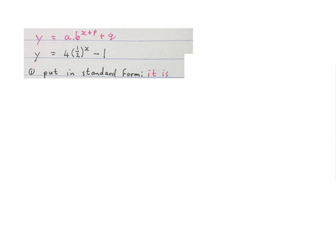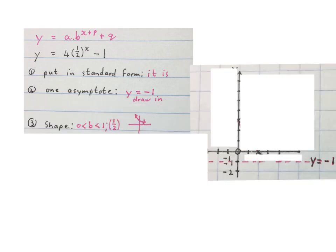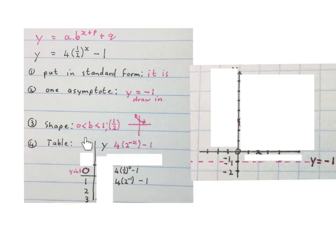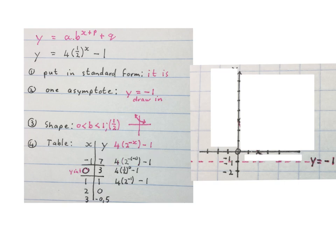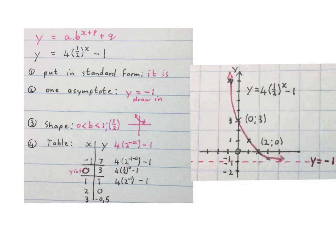Here is our next equation. We find the one asymptote: y equals the back number, so y = -1, and we draw it in. The base of x is a fraction between 0 and 1, so the graph will be coming down. We draw a table starting at x = 0, 1, 2. Substitute into the equation using a calculator or manually to find the coordinates and plot them. Take one or two smaller x values, plug into the equation, find the y values, and plot. Your graph will look something like this.